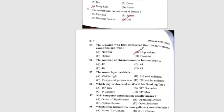Question 54: The number of chromosomes in the human body is — the correct answer is C, 46. Question 55: The ozone layer restricts — option D, ultraviolet rays. Question 56: Which day is observed as World No Smoking Day? The correct answer is D, 31st May.